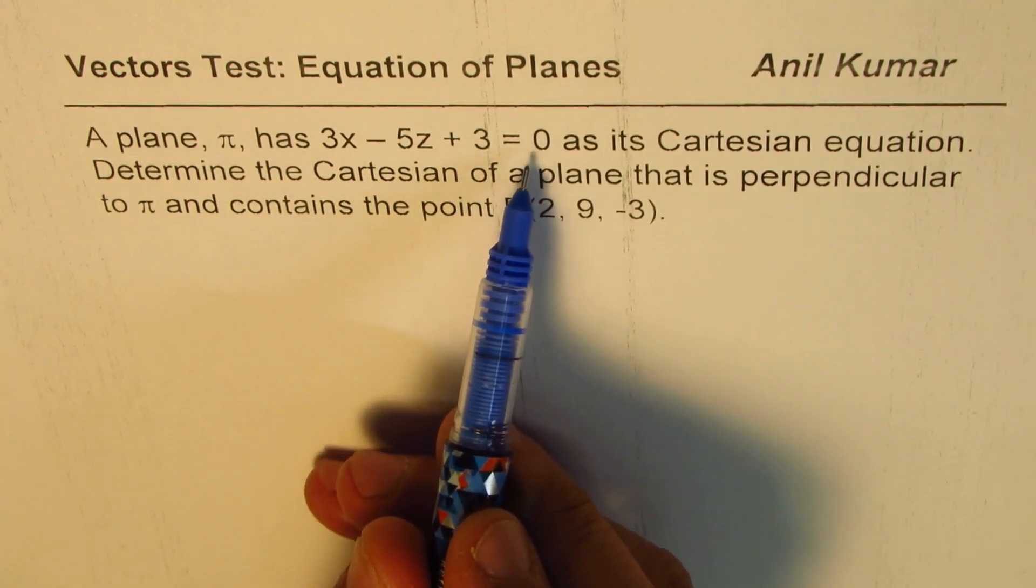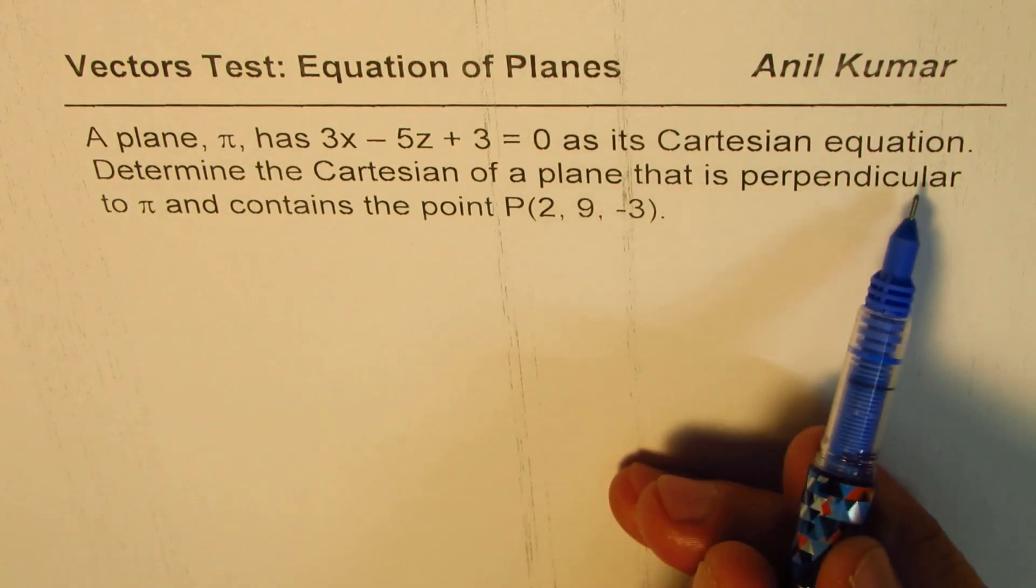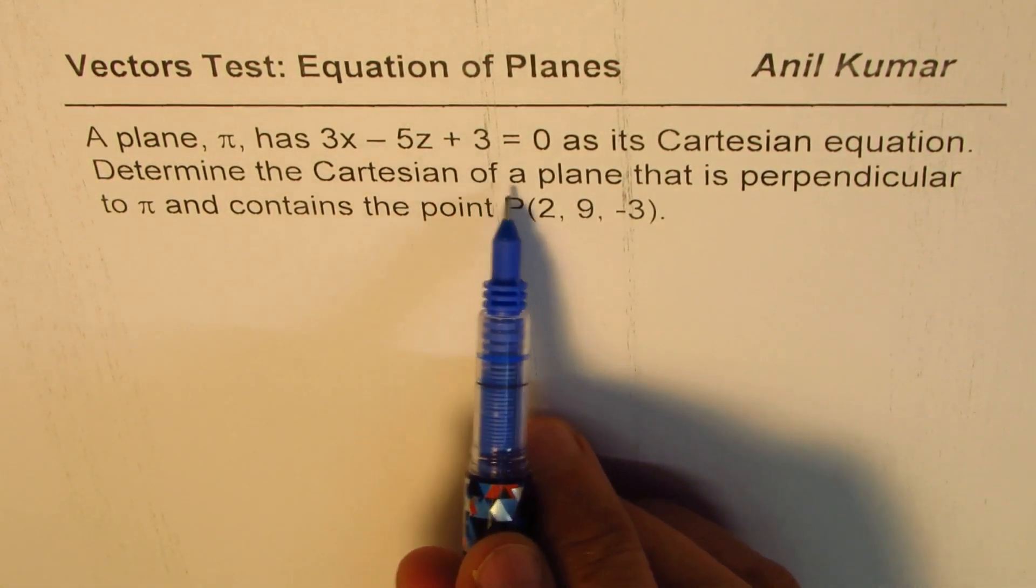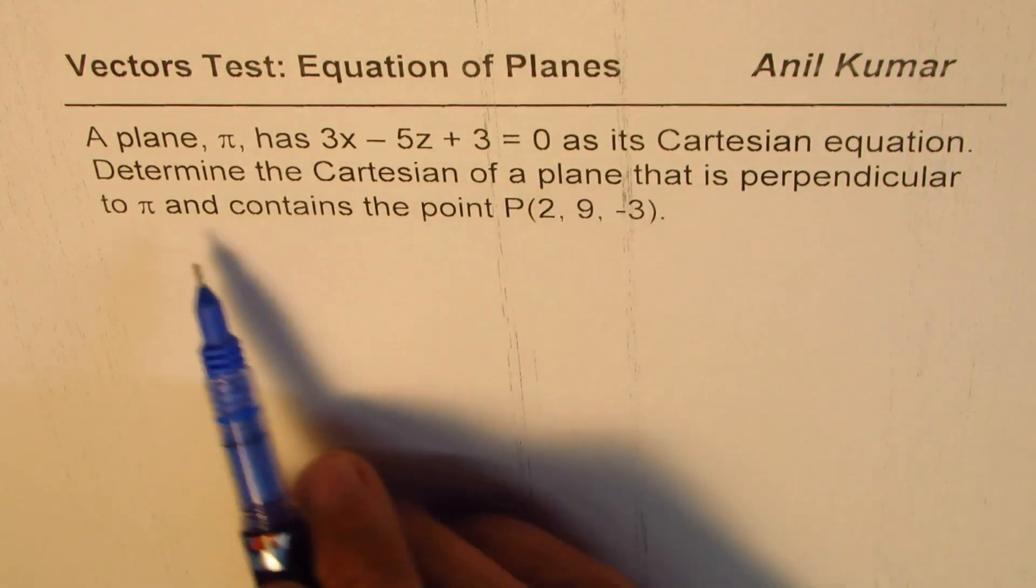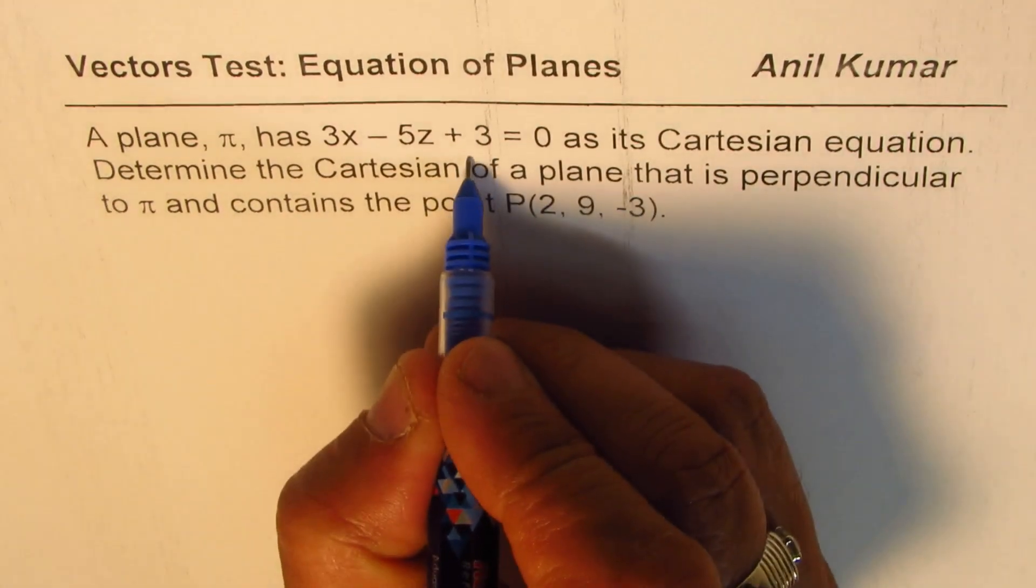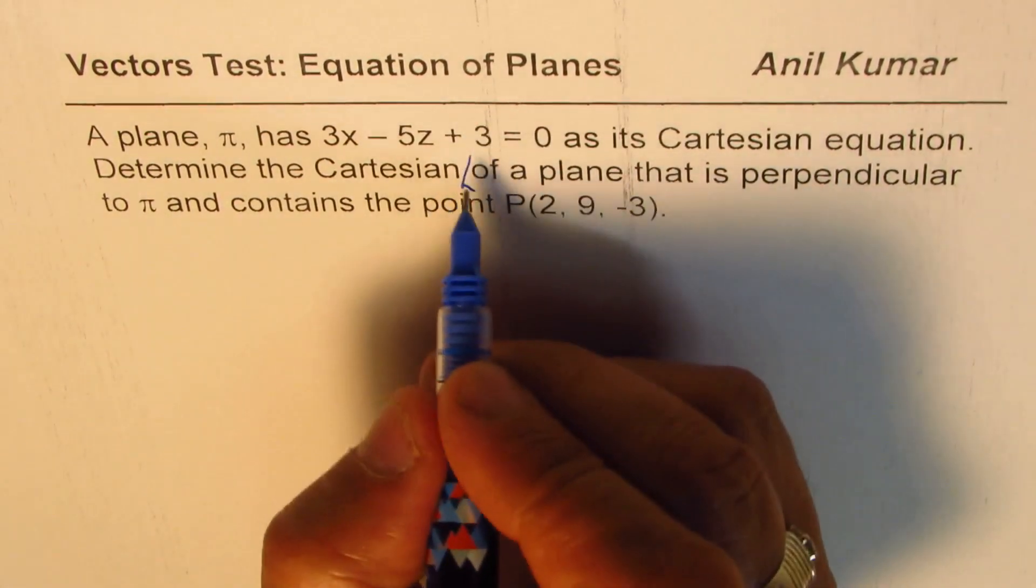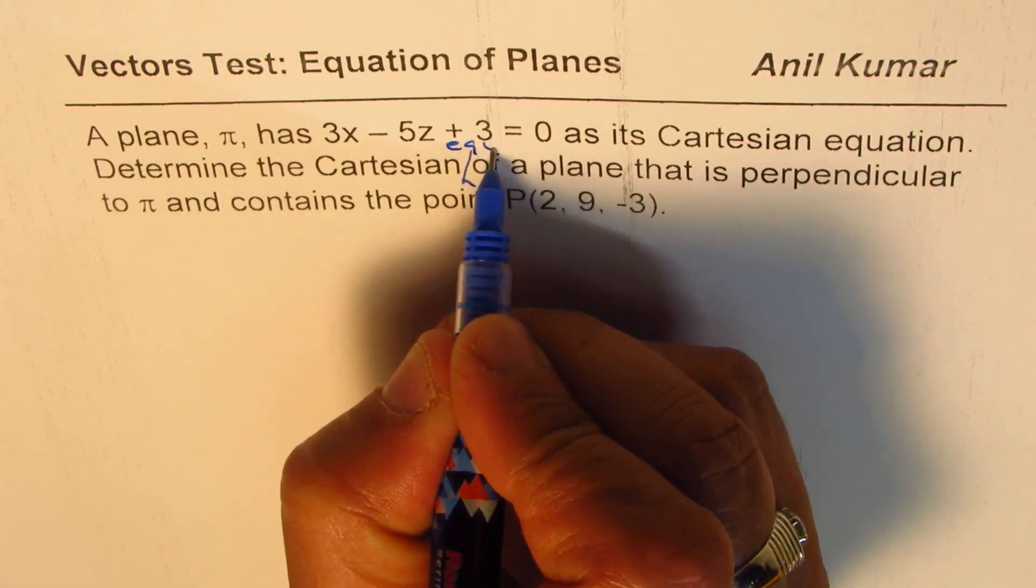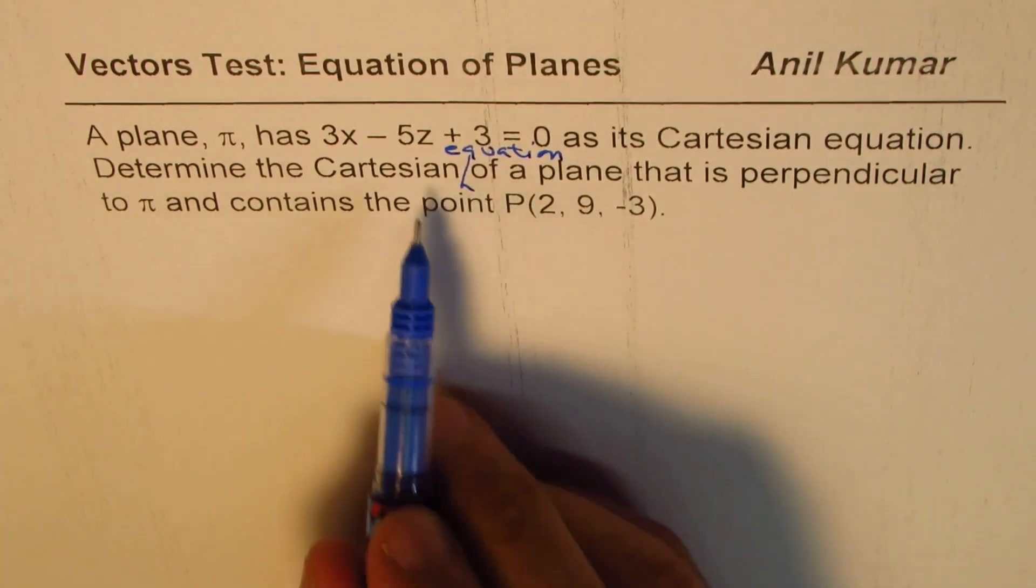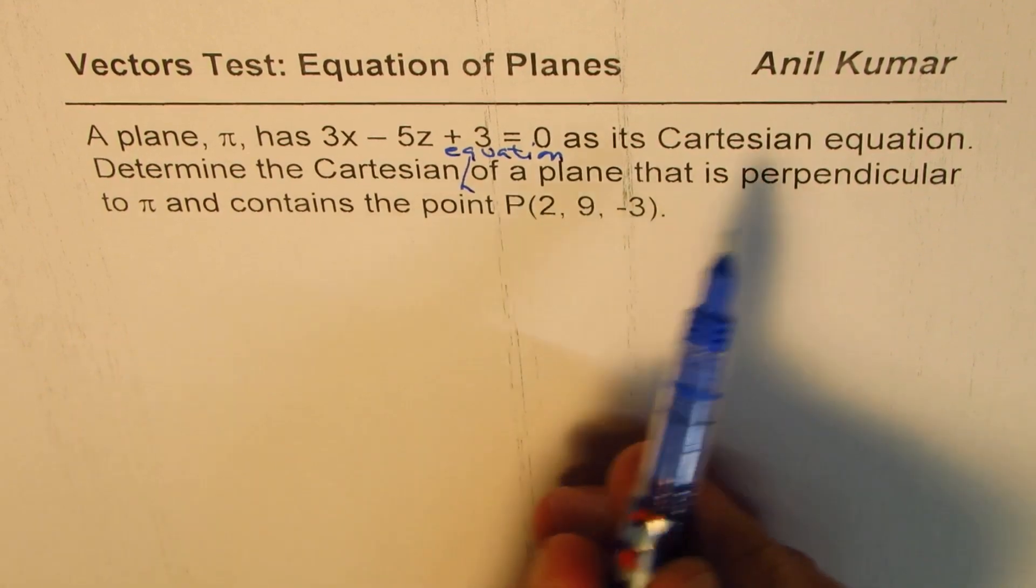as its Cartesian equation. Determine the Cartesian equation of a plane that is perpendicular to π and contains the point P(2, 9, -3). You need to pause the video, answer the question, and then look into my suggestions.